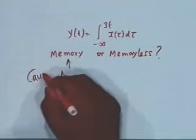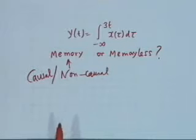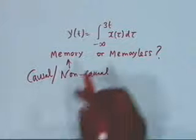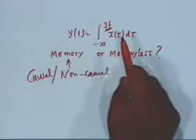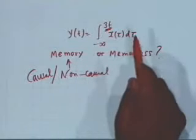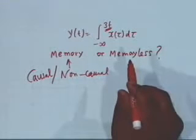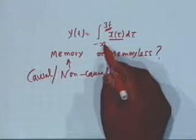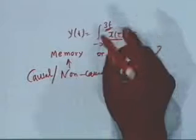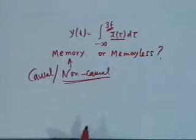Is the system causal or noncausal? It is noncausal, because of the 3T in the upper limit. If T equals 1, the output at T equal to 1 depends on the input that shall be applied at 3 — tau varies from minus infinity to 3T, so at T=1 the output depends on the future input at t=3. Therefore the system is noncausal.